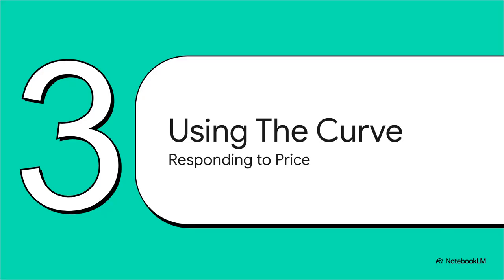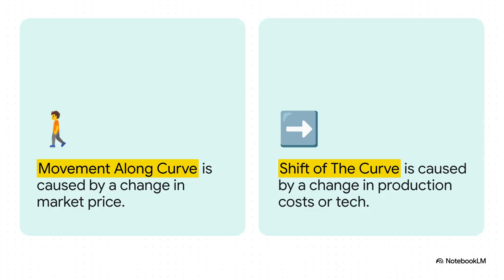So we've built our supply curve — now what? How do businesses actually use it? This next part is all about how producers react to the market as prices change all the time. There are two and only two ways supply can change: you can have a movement along the curve, which is just a reaction to a price change, or you can have a shift of the curve, which is something much bigger — it's when the fundamental economics of the business change.